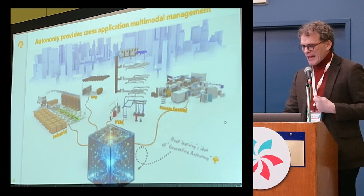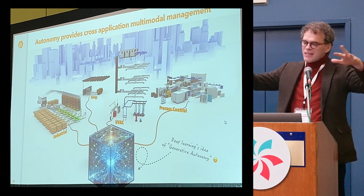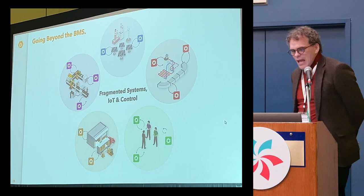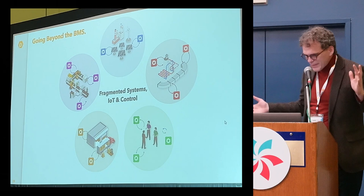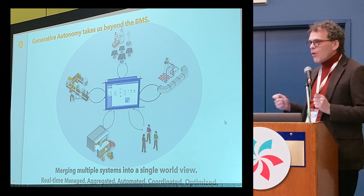What does autonomy do? Beyond making our buildings more optimal, it provides cross-application multimodal management — all these different systems, all different types, all being co-managed together. In today's BMS world, we have all these different control loops; you can network them together and get some data points, but they're not actually being controlled together. Autonomy allows us to bring them all together under one roof and co-control them so they're co-optimal as a suite of subsystems all working together.